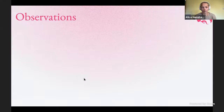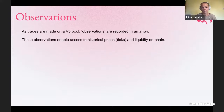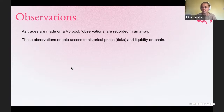The way we record prices in the contracts is using something called observations. As trades are made on Uniswap, the contracts record observations in an array. These observations mean that you can access historical price data on chain, which you can't normally do with historical state of a smart contract. Recording these observations as time goes on means that in the current block you can access the tick — the price — that a pool was at in a previous point in time.